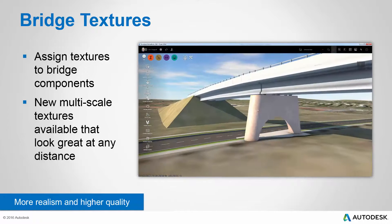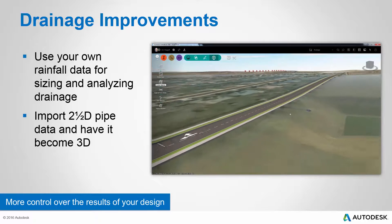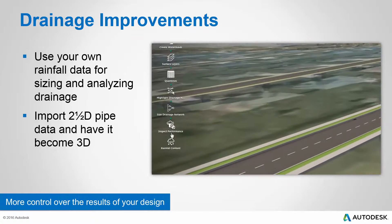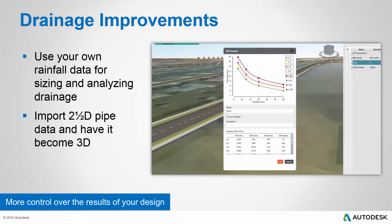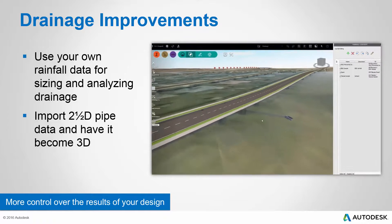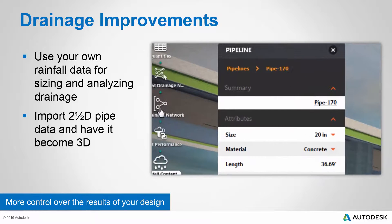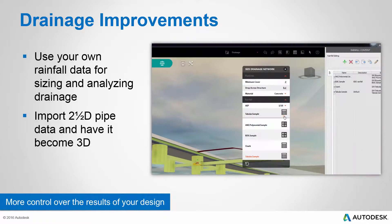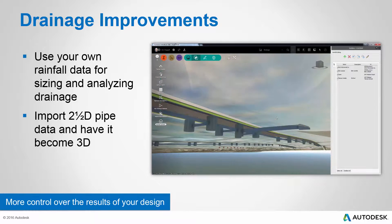There's also big news in the area of drainage design. You can now use your own rainfall data for sizing and analyzing drainage. By clicking on the rainfall content icon, there's a special panel for creating your own IDF rainfall data. You can import it from a file — we support some common formats — or manually type in the values. You can assign that data to different functions in the software. For example, we'll size a pipe based on a different rainfall data file, choosing our Ozark rainfall data, and you'll notice the pipe size changes based on this updated rainfall data.